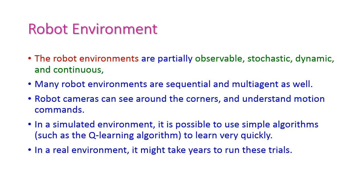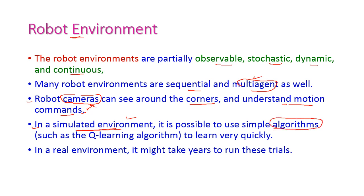Robot environments are normally observable, stochastic, dynamic, and continuous. Sometimes they may also be sequential and multi-agent environments. Robot cameras can see even in corners and understand motion commands. In simulated environments it is possible to use simple algorithms like Q-learning to learn very quickly, but in real time it takes years for humans to learn such things — robots can learn all those things easily using Q-learning algorithms.